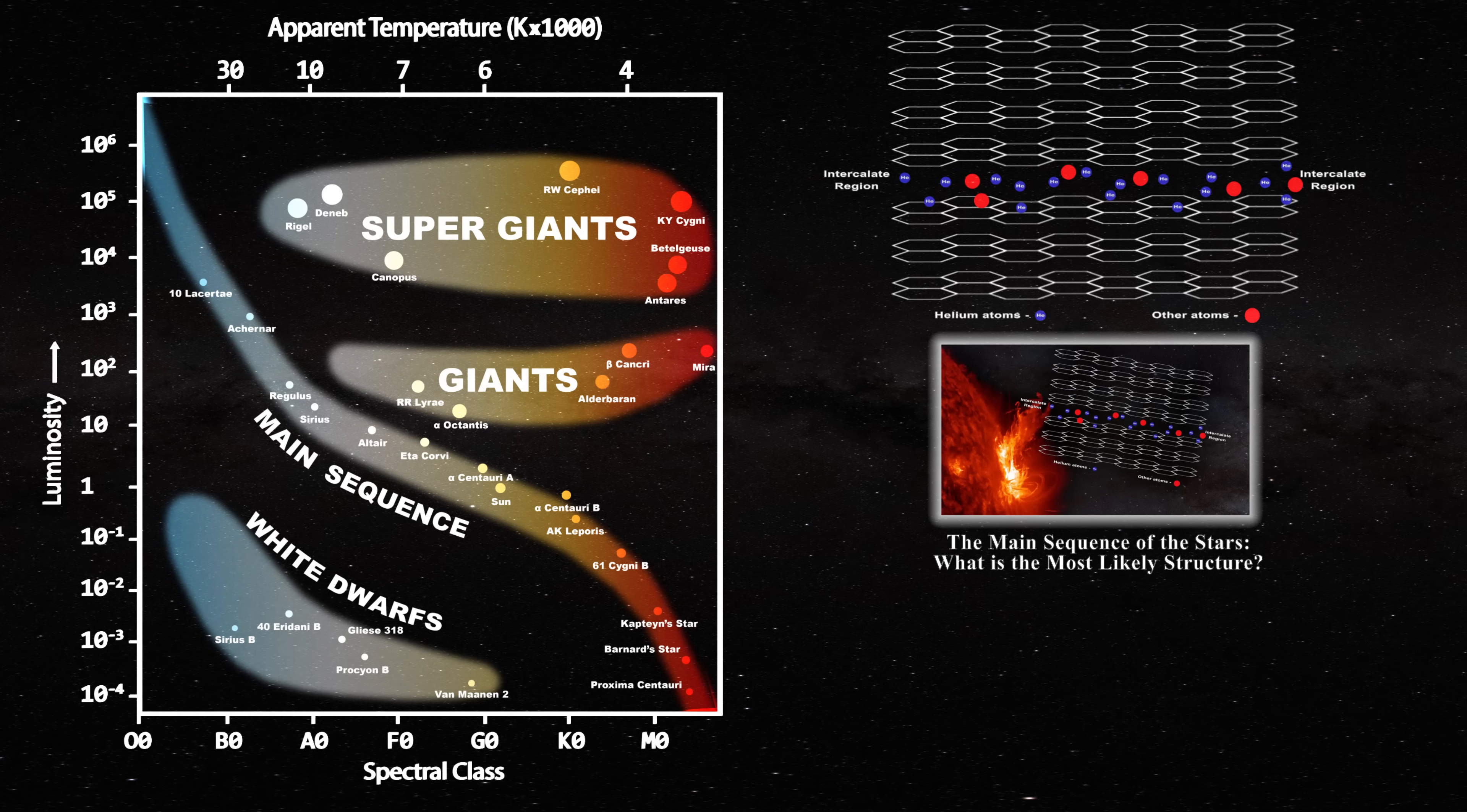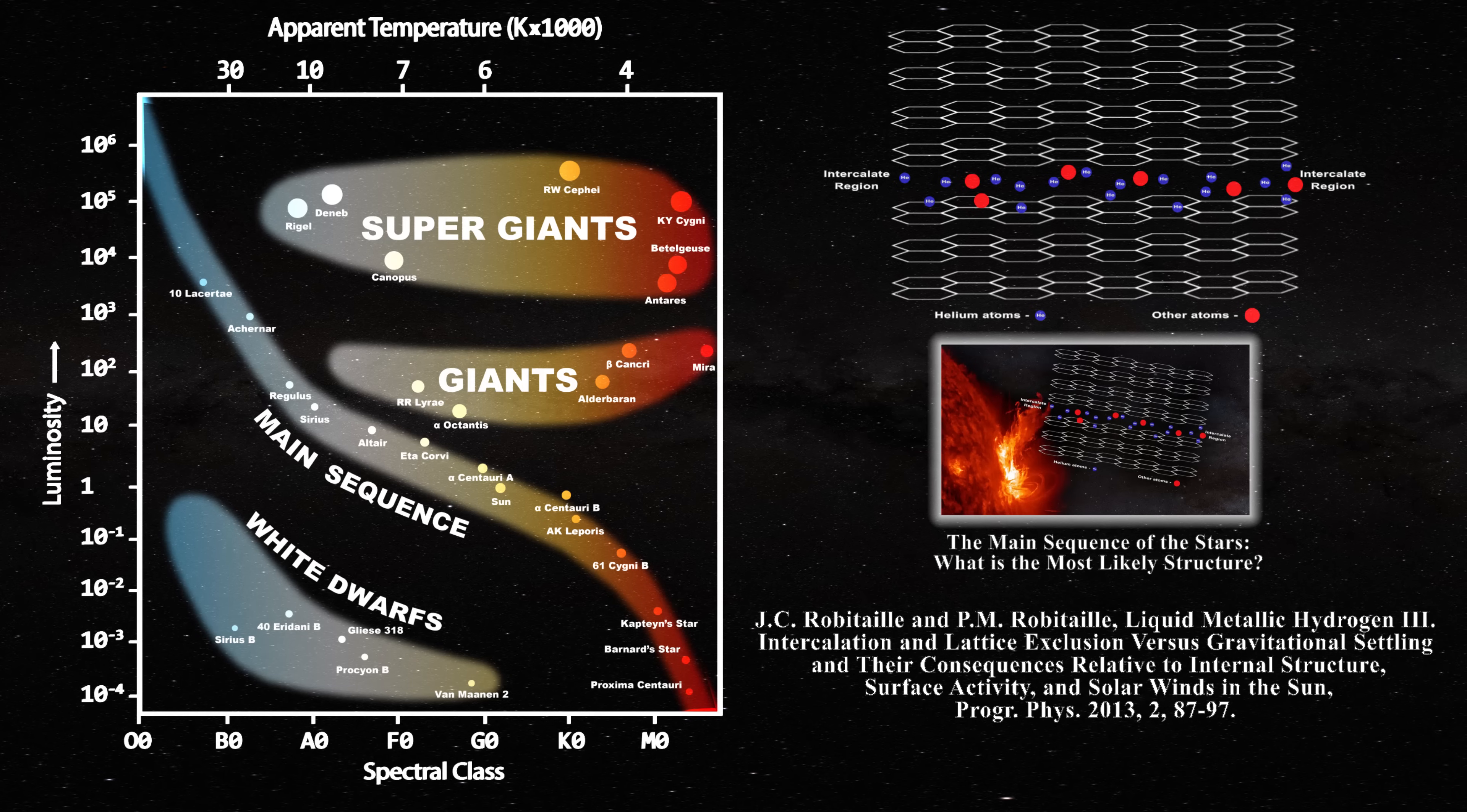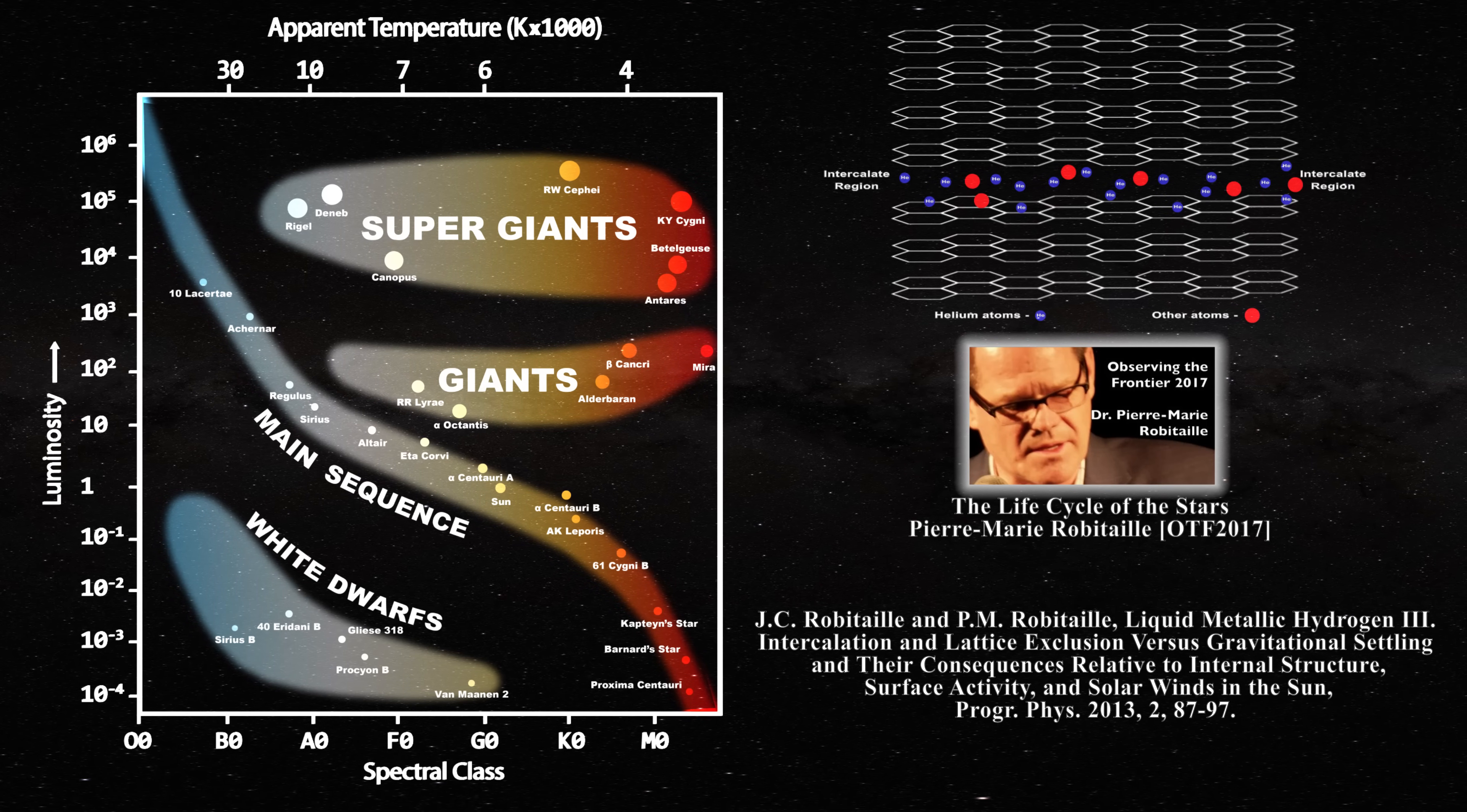As a result, stable stars are constantly clearing their intercalate zones by expelling non-hydrogen elements. That is why the Sun becomes active on an 11-year cycle, as previously described here. Simplistically, this is also why stars can form red giants or supernovae, as previously outlined in this presentation. Again, both processes owe their origin to atoms located in intercalate regions.